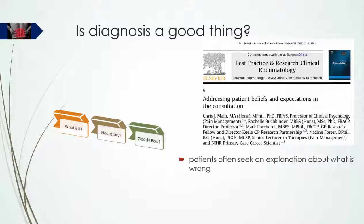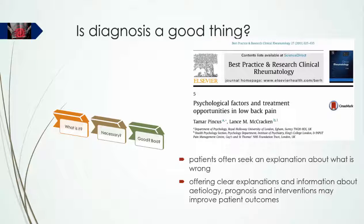On a more positive note, there is good evidence that patients often seek an explanation about what is wrong. In fact, there is evidence that this is the prime motivation for many patients to seek advice. Pincus and McCracken report that offering clear explanations and information about the etiology, prognosis, and intervention may improve prognosis. I would also argue that diagnosis properly delivered is an important part of the information package that a proportion of patients really need as part of a package of care. In my own experience, I regularly witness profound mood changes when a diagnosis is provided that excludes cancer or other serious diseases. Even when the diagnosis is not so benign, patients are often extremely happy to finally have a rational explanation they can use to make reasonable modifications to their lifestyles.